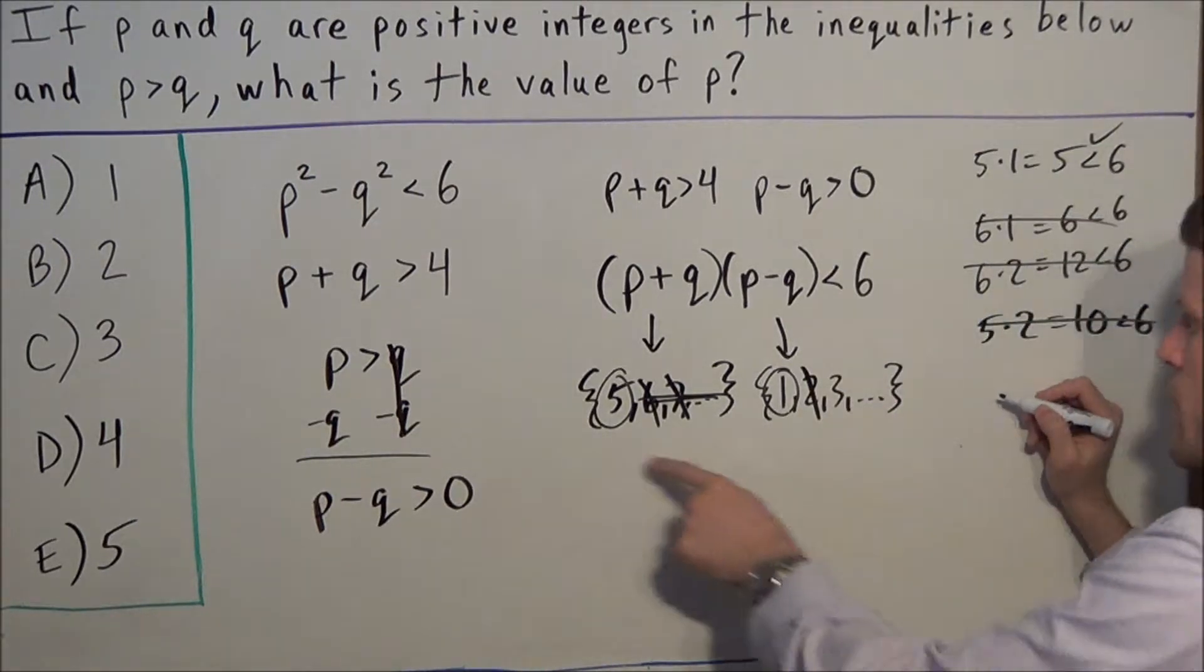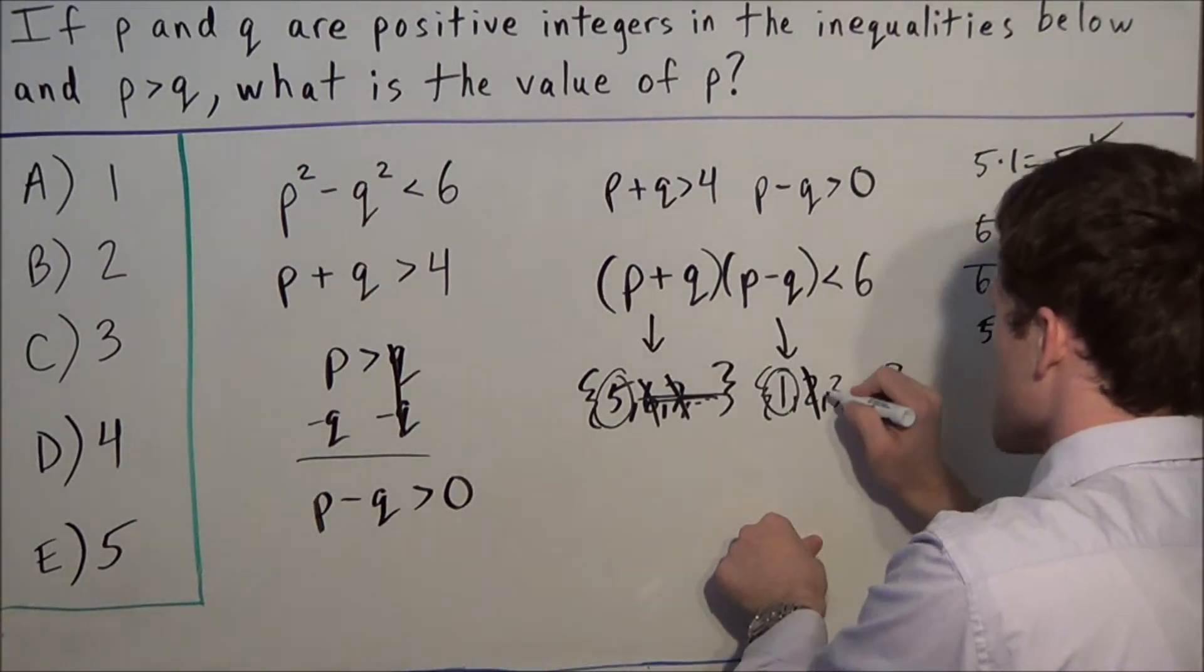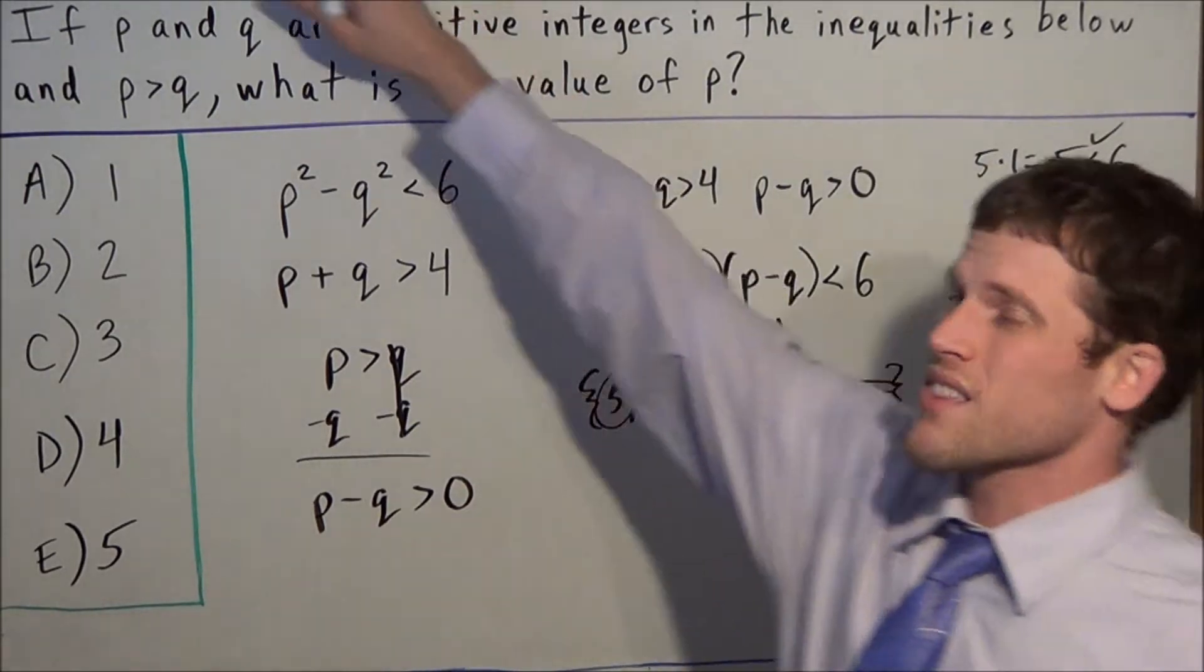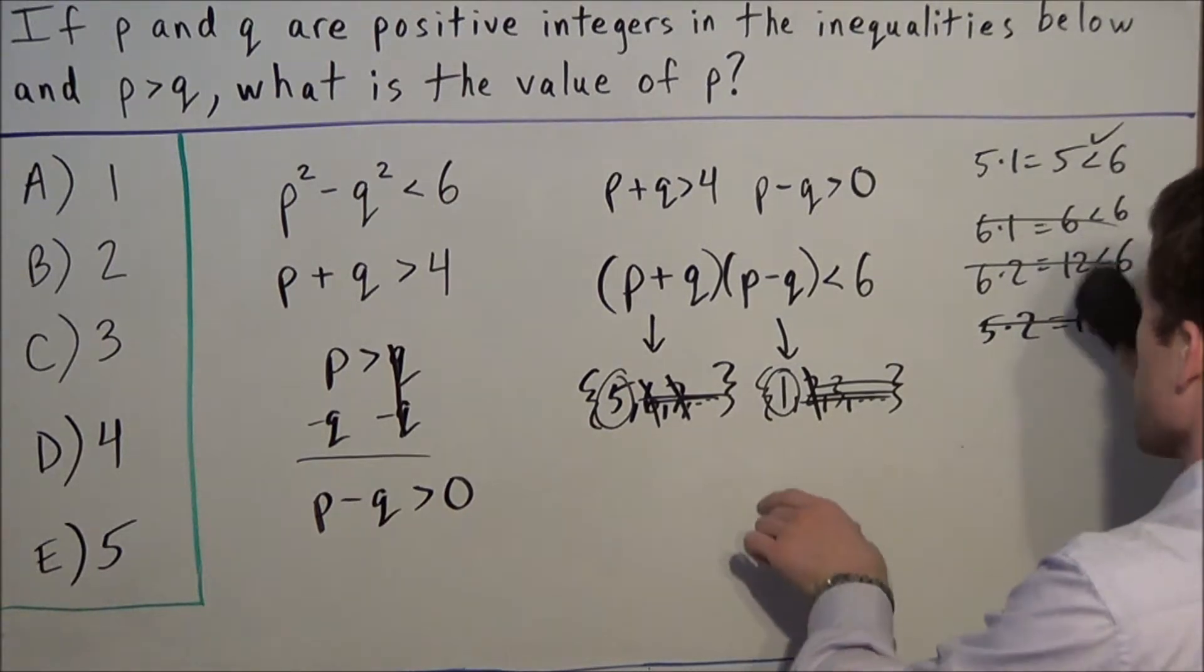This product is not less than 6. So we cross off 2, and 5 × 3 = 15, which isn't less than 6 either. We cross off the rest of the numbers. This tells us these factors can only be 5 and 1 respectively.